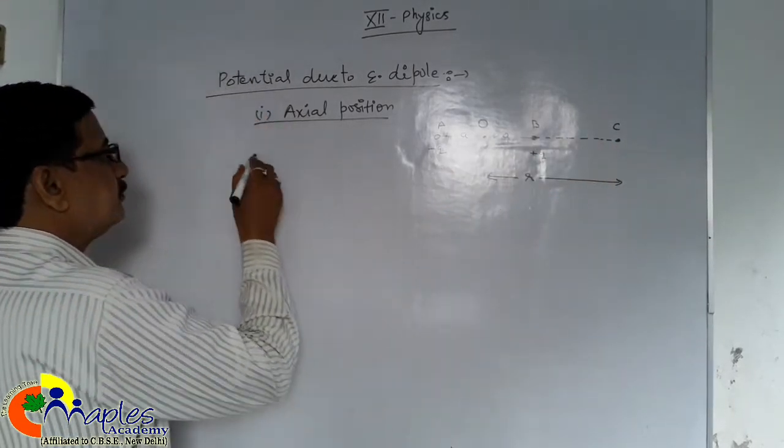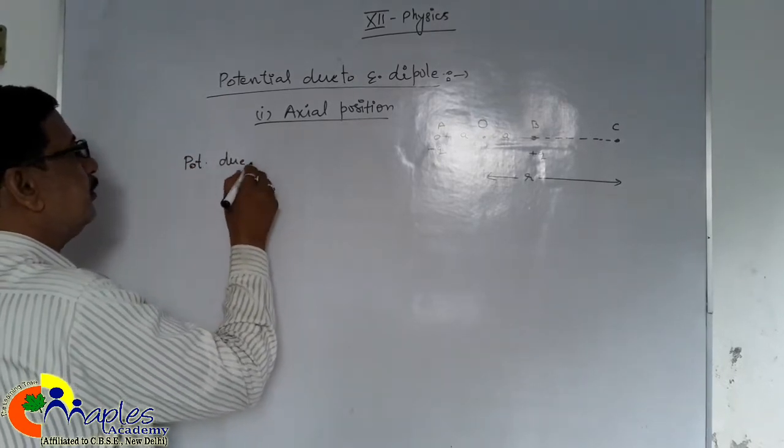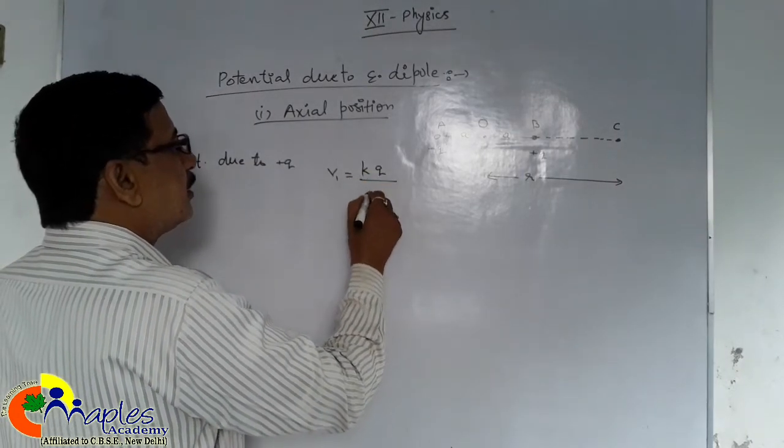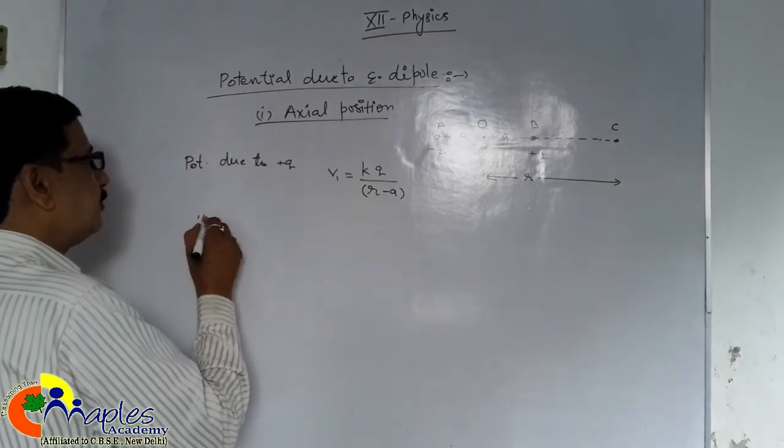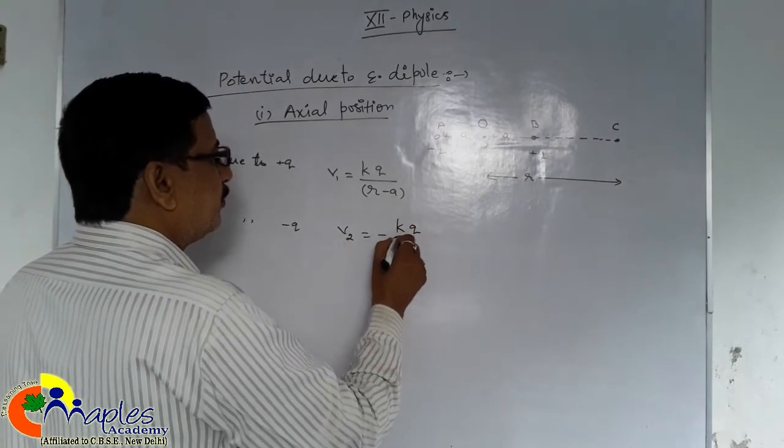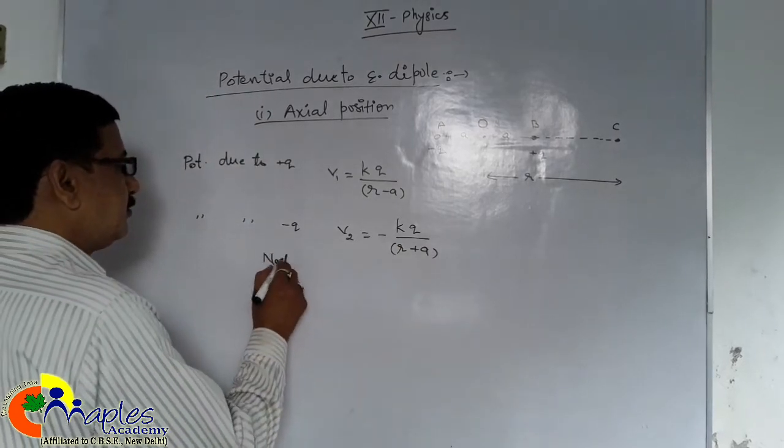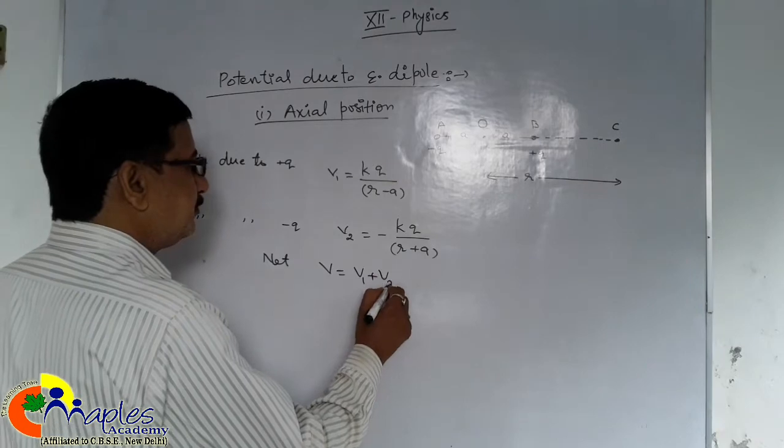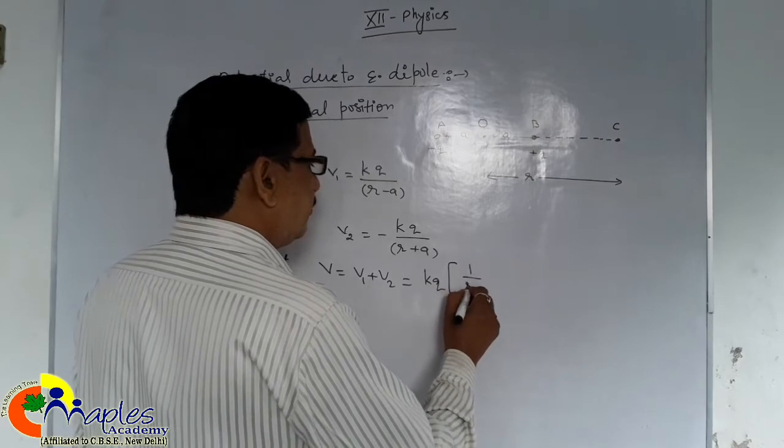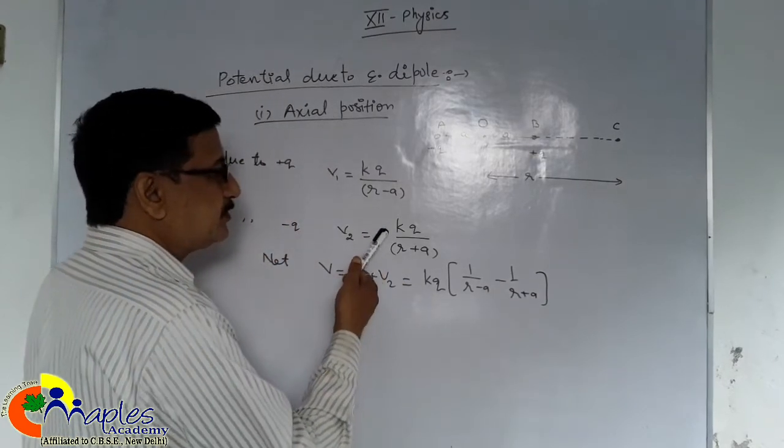So potential. Potential due to plus Q, suppose it is V1, equals KQ upon R, R means R minus a. And potential due to minus Q, suppose it is V2, equals minus KQ upon R plus a. So net potential, we will add both. V1 plus V2. And it is KQ is common. Remaining is 1 upon R minus a minus 1 upon R plus a. 1 upon this minus 1 upon this.